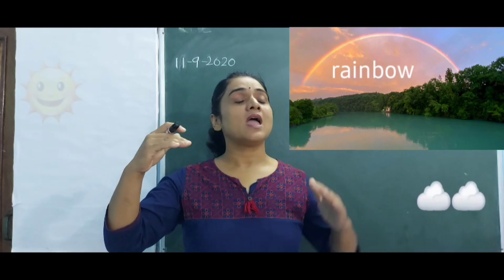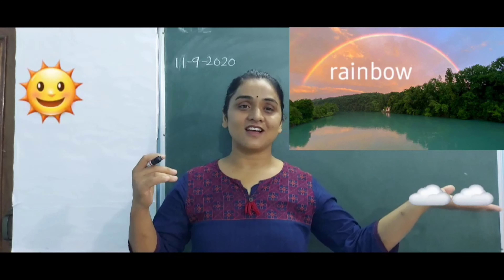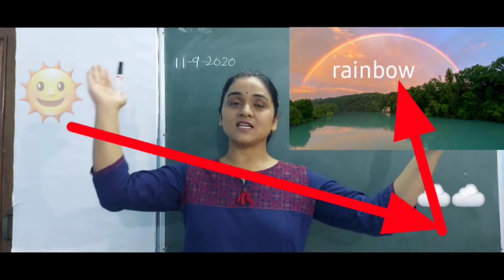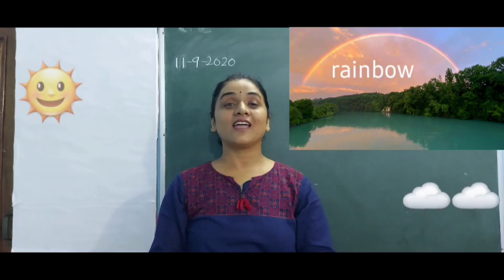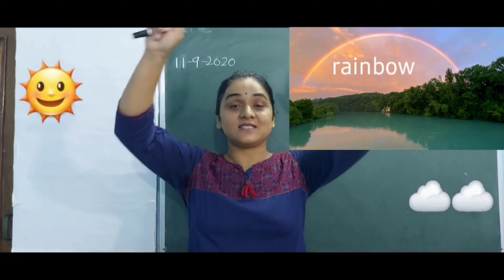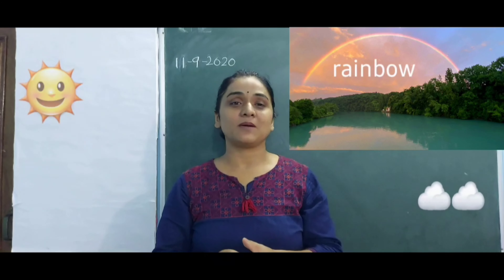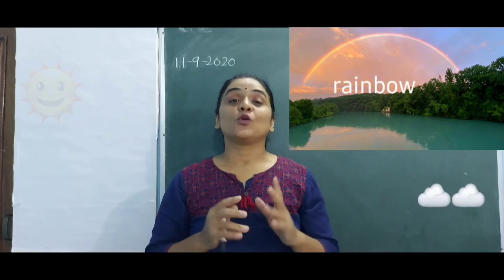Then the rainbow occurs. Yes, rainbow occurs after the rain — when the sun is coming from one side and the other side of the sky is still dark. So what is formed? Rainbow is formed! Do you know how many colors are there in a rainbow? Yes, there are seven colors.